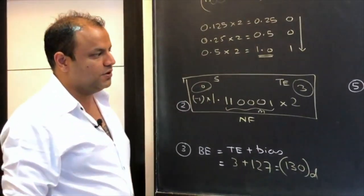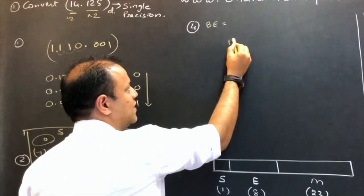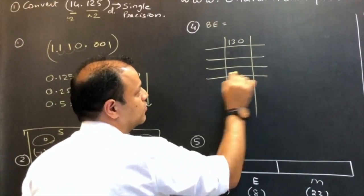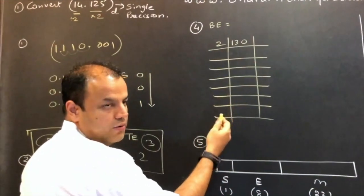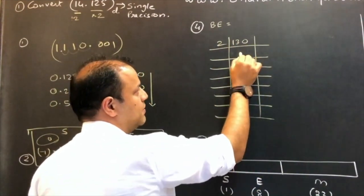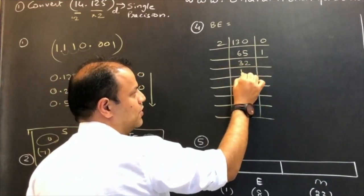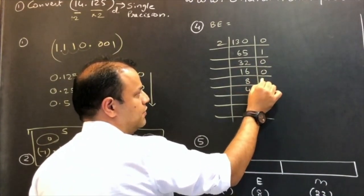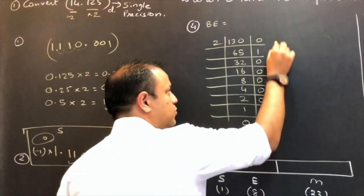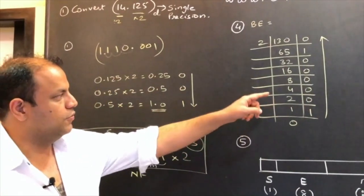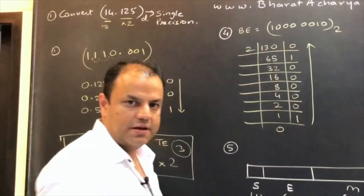130 is a decimal number; in the format, everything has to be binary. So the fourth step: convert the biased exponent 130 into binary using repeated division by 2. 130 ÷ 2 = 65 remainder 0; 65 ÷ 2 = 32 remainder 1; 32 ÷ 2 = 16 remainder 0; 16 ÷ 2 = 8 remainder 0; 8 ÷ 2 = 4 remainder 0; 4 ÷ 2 = 2 remainder 0; 2 ÷ 2 = 1 remainder 0; 1 ÷ 2 = 0 remainder 1. Reading bottom to top: 10000010. That is your biased exponent in binary.